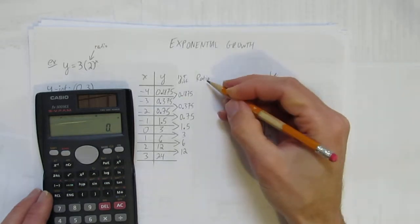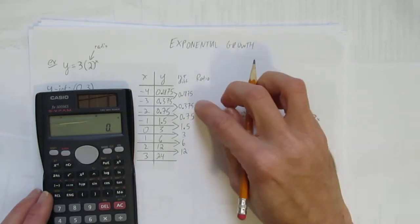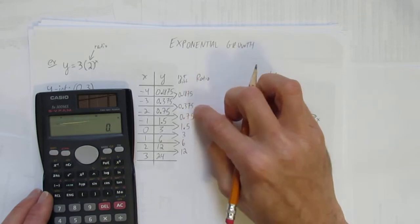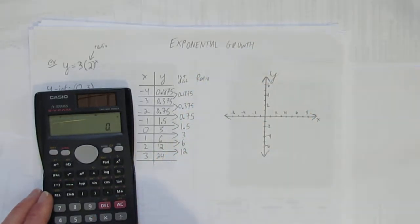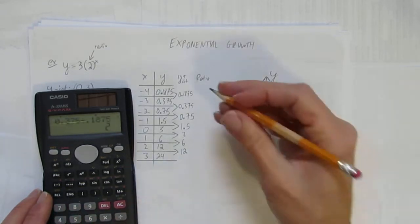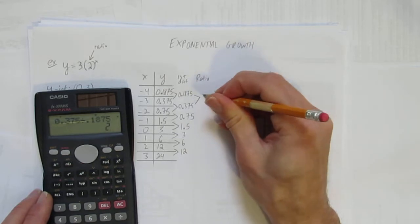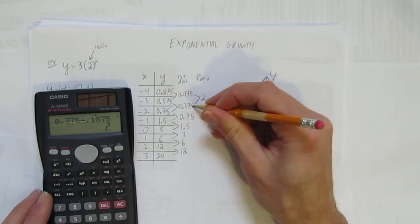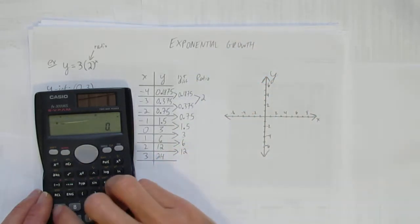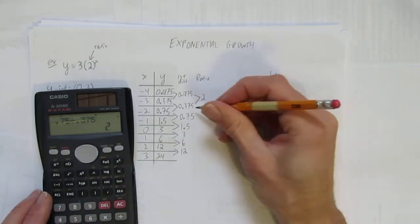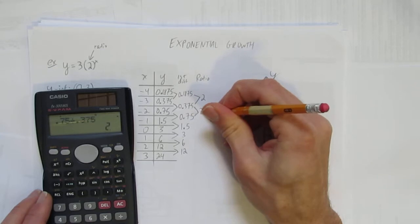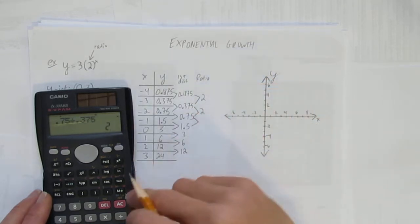Now let's calculate the ratio. How do you calculate the ratio? Take each of the first differences, second one divided by the first one. 0.375 divided by 0.1875—you get the ratio is 2. Again, second thing divided by first thing: 0.75 divided by 0.375? 2. 1.5 divided by 0.75? 2.